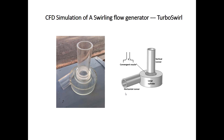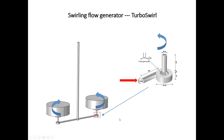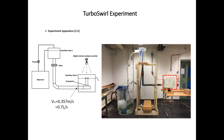This turbo-swirl device is originally used for an uphill teaming process of liquid steel in the ingot casting process. In the ingot casting process, the liquid steel can flow in from the horizontal runner, then flow out from the vertical runner, and the liquid steel can flow rotationally automatically. We also did some water model experiments, and we found that an air vortex was formed in the center of this turbo-swirl device.